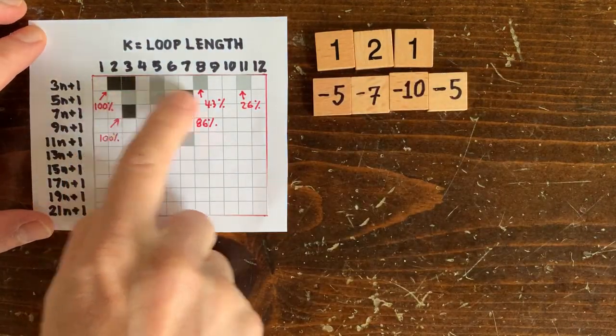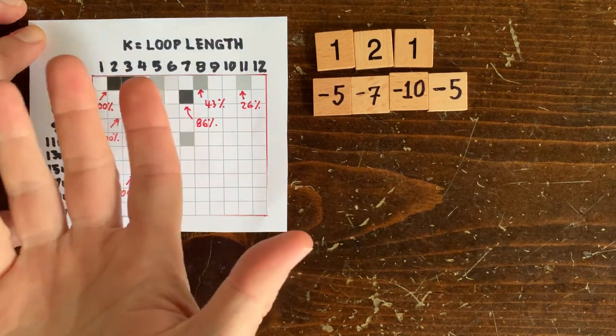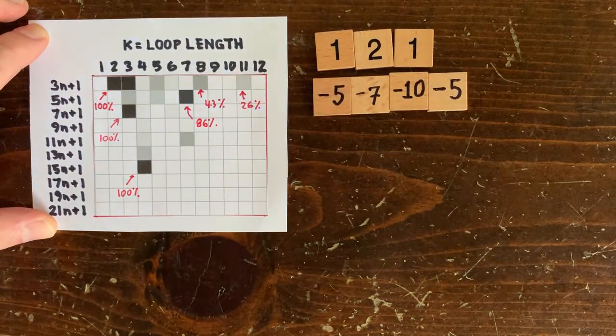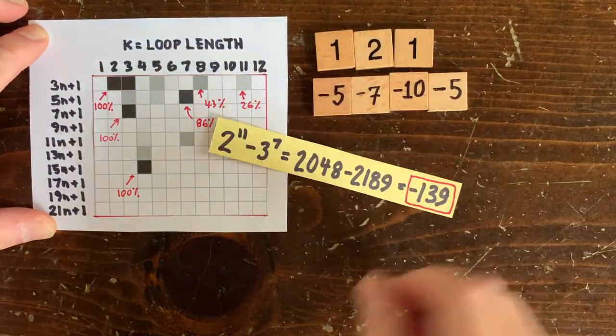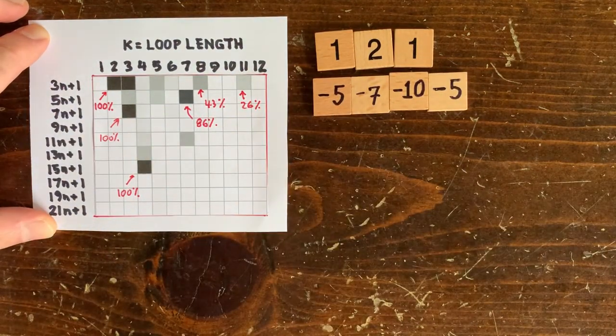And there's good chances for a length 8 loop here, but it just doesn't happen. And there's a 26% chance of a length 11 loop, because 2 to the 11th is close to 3 to the 7th. And sure enough,